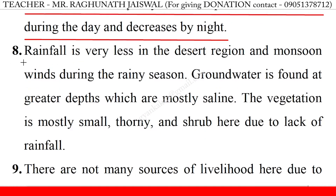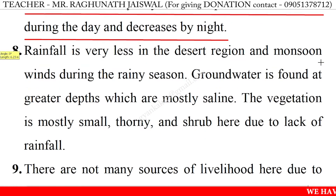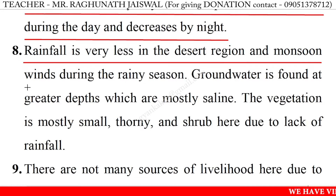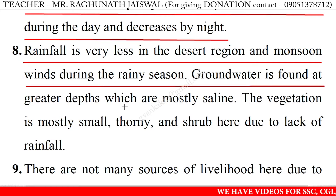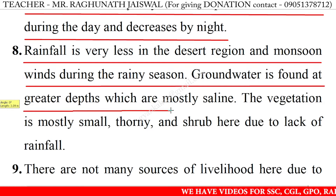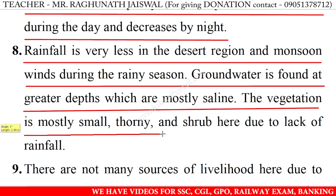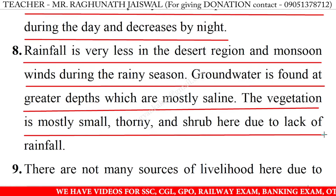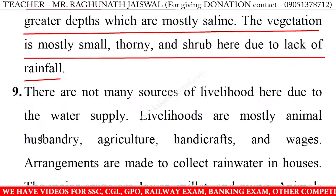The temperature rises a lot during the day and decreases by night. 8. Rainfall is very less in the desert region, with monsoon winds during the rainy season. Groundwater is found at great depths and is mostly saline. The vegetation is mostly small, thorny shrubs due to lack of rainfall.